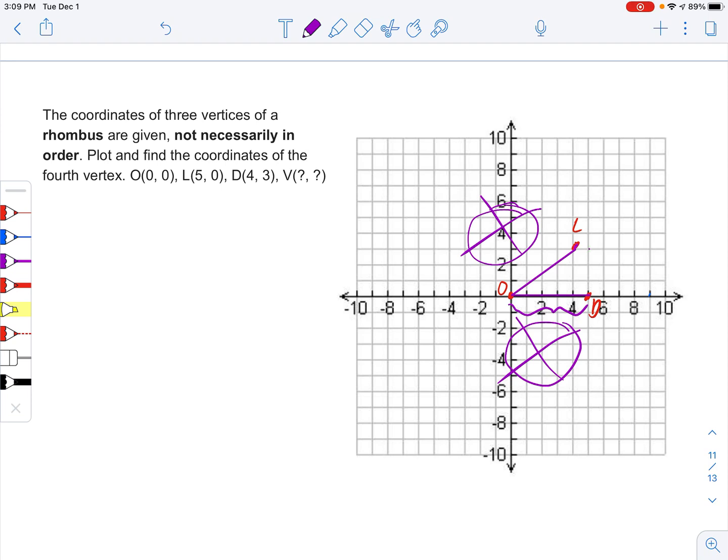So if I start out up here and I count one, two, three, four, five, I know that LV is going to be the same length. And then we can finish it off, and there's our rhombus. And so that's going to be our answer.